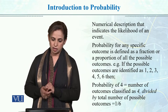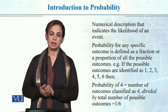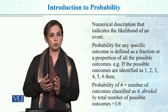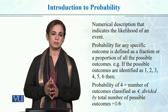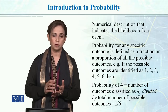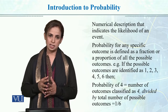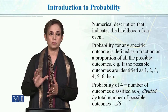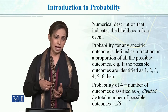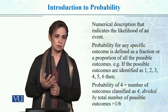Probability for any specific outcome is defined as a fraction or a proportion of all the possible outcomes. For example, if you roll a dice, how many possible outcomes are there? It has 6 sides: 1, 2, 3, 4, 5, 6. So we have 6 sides. Probability is a fraction of all possible outcomes. So if I roll a dice, the probability of getting a 6 is 1 by 6.